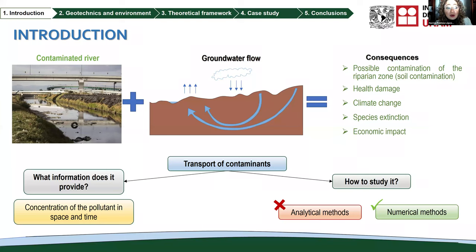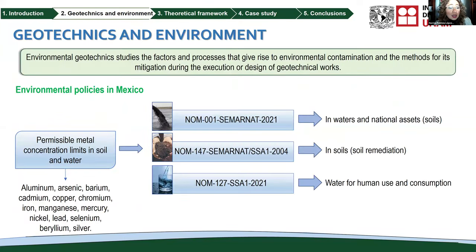Groundwater flow in soil zones is studied by geotechnics. When groundwater flow is contaminated and gives rise to environmental pollution, it is studied by environmental geotechnics. To establish whether contamination is present, reference parameters are required. In this study, contamination occurs by heavy metals, so we compare with limits for heavy metal concentration in soils and water. In Mexico, we have regulations for water and natural assets, for soil remediation, and for water for human use and consumption.